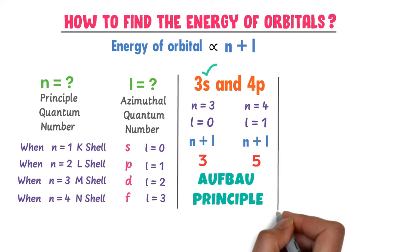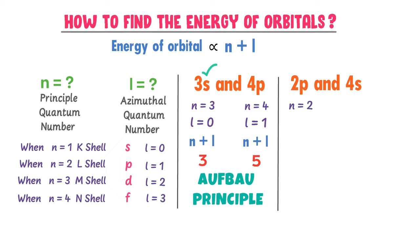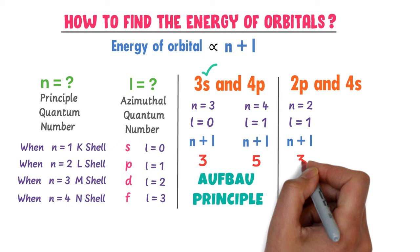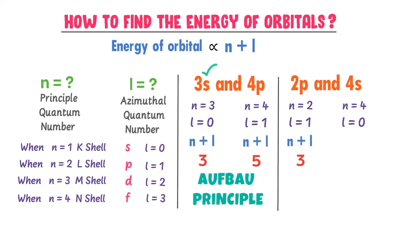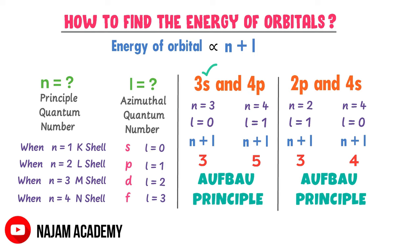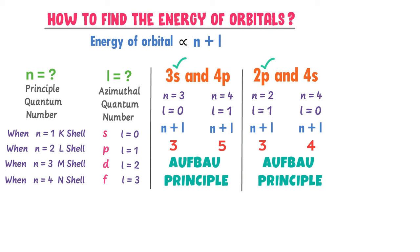The second example is 2p and 4s. In case of 2p, n equals 2 and for p, l equals 1. So n plus l equals 3. In case of 4s, n equals 4 and for s, l equals 0. So n plus l equals 4. Thus, 4s has more energy than 2p. Therefore, according to the Aufbau principle, electrons will first fill the 2p orbital and then the 4s orbital.